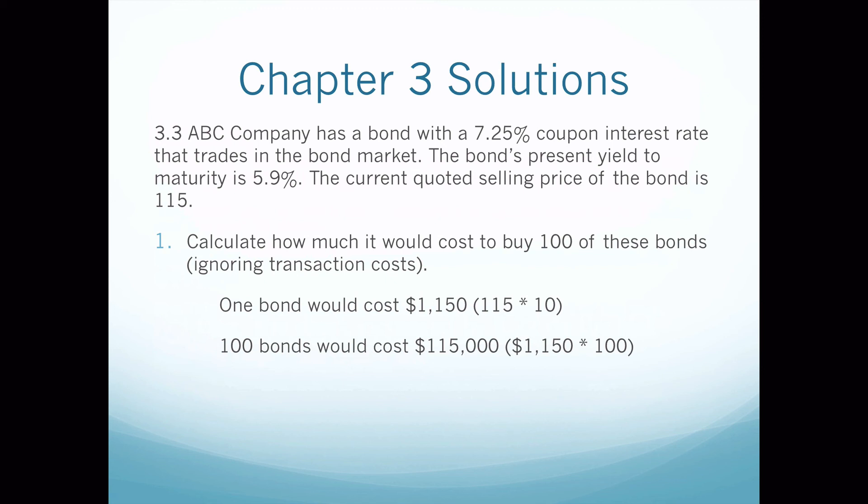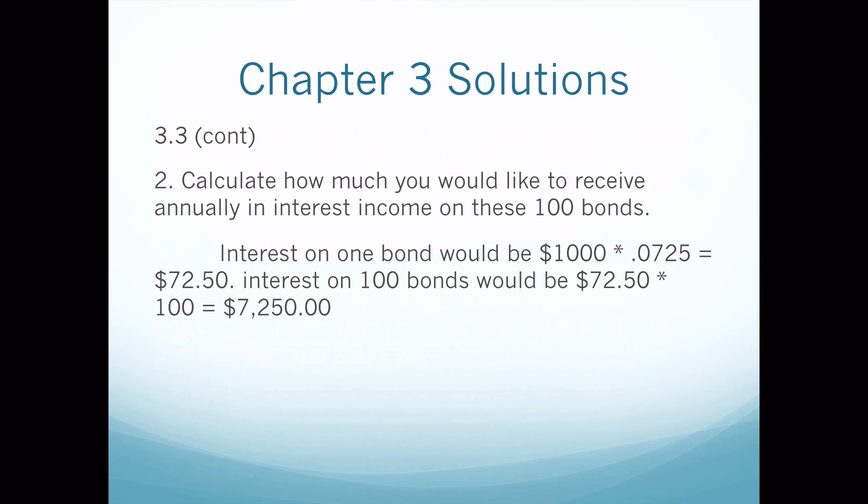Then multiply $1,150 by 100 for a hundred bonds, and you get $115,000. For part two — how much interest would you receive on these hundred bonds — first figure out the interest on one bond: take the par value of $1,000 and multiply it by the coupon of 0.0725 (7.25% as a decimal), and you get $72.50. Then the interest on a hundred bonds would be $72.50 times 100, which is $7,250.